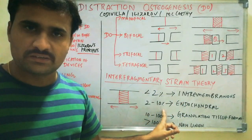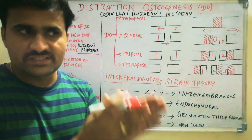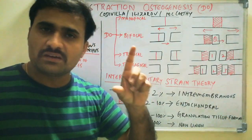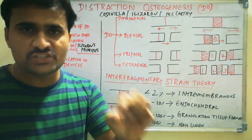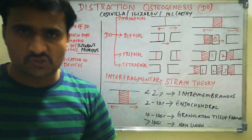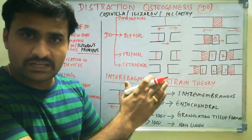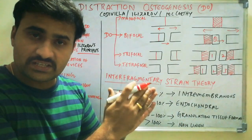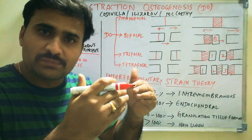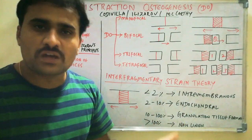If strain is 2 to 10%, it leads to endochondral bone formation — bone formation through cartilage. Initially chondrocytes lay down cartilage, which then ossifies into bone by osteoblasts. Chondrocytes can sustain more strain than osteoblasts: osteoblasts sustain up to 2%, chondrocytes up to 10%. Initially, cartilage formation reduces micromotion between fragments to below 2%, then osteoblasts infiltrate and form bone.